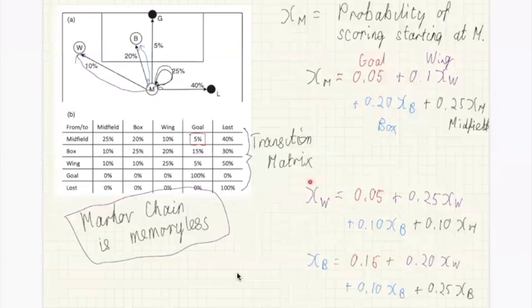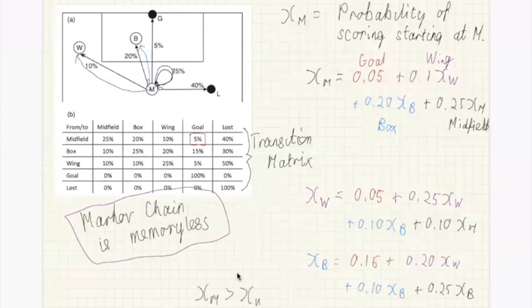What we now have is a set of three equations which tell us the probability of scoring if we start in midfield, on the wing, or in the box. But these don't entirely solve the problem, because x_m appears on both the left-hand side and the right-hand side. We have an interdependent system of equations. It's quite clear that in the box we're more likely to score than from midfield or the wing, but what isn't clear is whether x_m is bigger or smaller than x_w — do you have a better chance of scoring from midfield or from the wing?